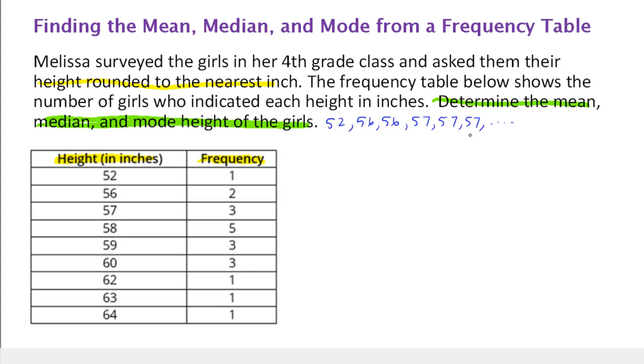Now notice, if we were going to find the average of this list, we'd add up all the numbers, divide by the number of numbers or the total frequency, and that would give us the mean. We're going to do this in a more efficient way rather than listing all of these out and adding up all these numbers.